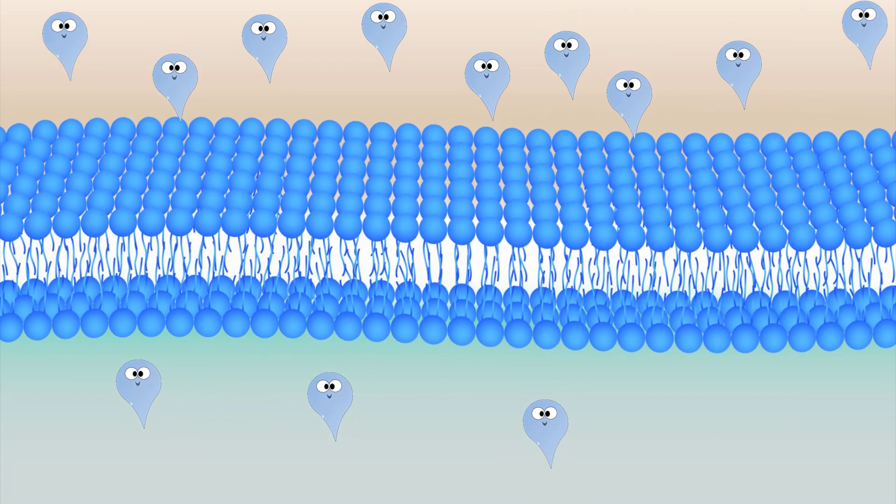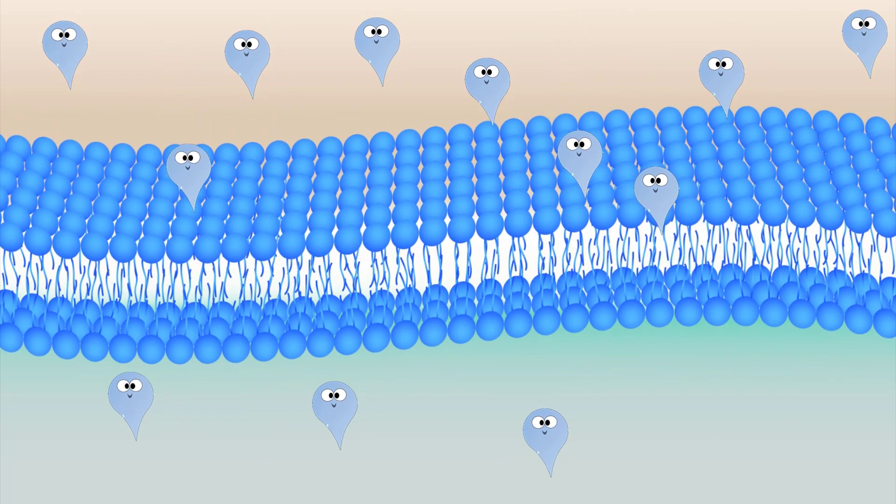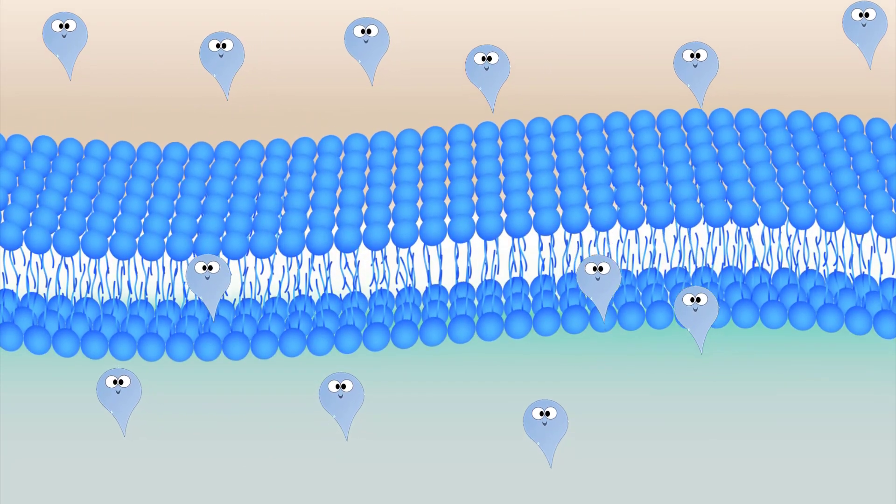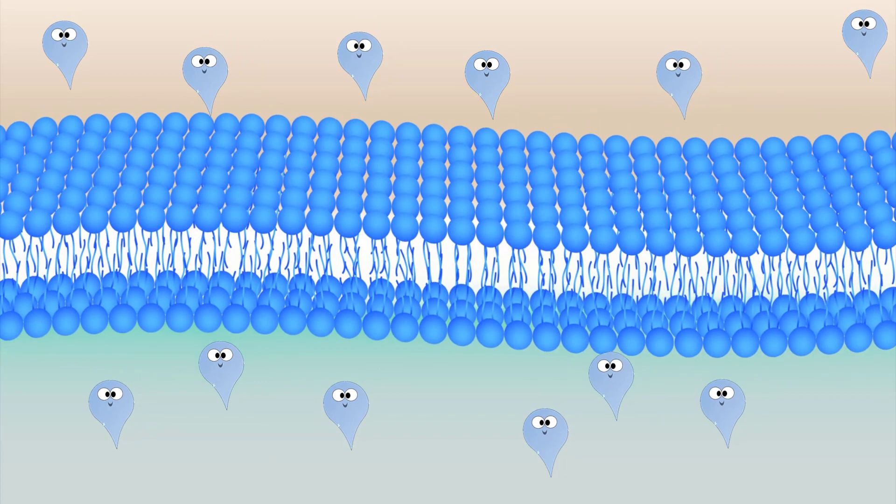Osmosis is the diffusion of water through a semi-permeable membrane. Osmosis is indeed a form of diffusion.